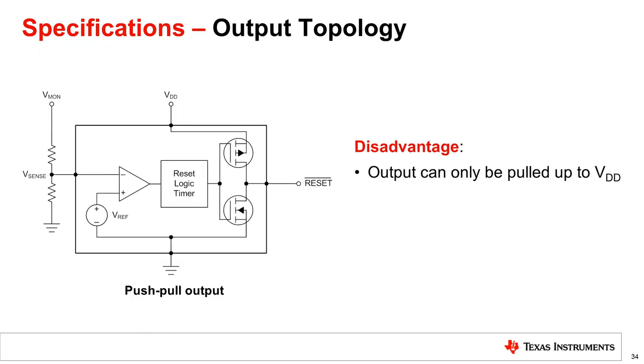Another disadvantage of the push-pull supervisor is its ability to only pull up to VDD. Depending on the load connected to the output of the supervisor, the VDD of the supervisor may be either too high or too low for the logic level of the load. In such a case, it may be more beneficial to use an open drain supervisor where the user can control the pull-up voltage at the output.